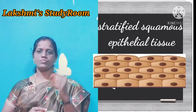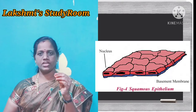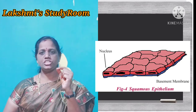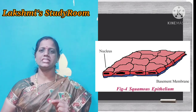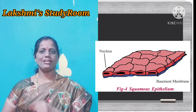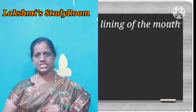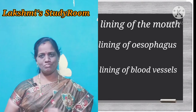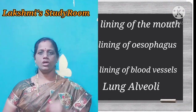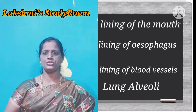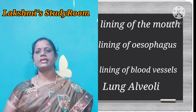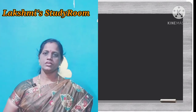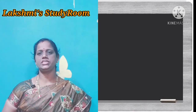Squamous is derived from the Latin word. Squamous means the scales of fish or any reptile. That is how these epithelial tissues look — they are extremely thin, flat and form a delicate lining. It is present in the lining of the mouth, lining of the esophagus, lining of the blood vessels and also lung alveoli. The function of squamous epithelial tissue is that transportation of substances selectively occurs through the permeable membrane where this type of tissue is present.